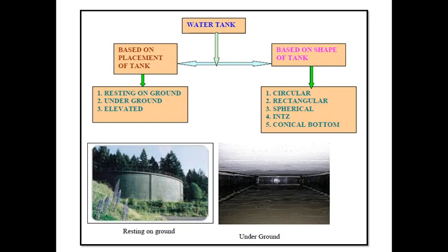Now coming to types of water tanks. First, the classification is done based on placement of the tank. If the tank is resting on ground, it is called a resting-on-ground tank, or in other words, it is referred to as GSR — Ground Storage Reservoir. If the tank is constructed below the ground, it is called an underground tank or USR — Underground Storage Reservoir. The third type is an elevated tank, also referred to as HGLR — High Ground Level Storage Reservoir.